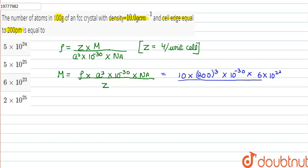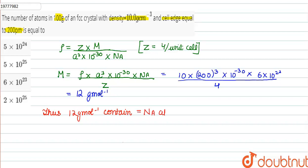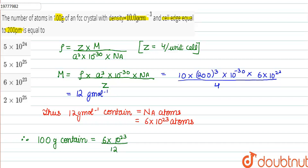Into NA equal to 6 into 10 raised to the power 23, upon z equal to 4. When we solve this, we get the molar mass equal to 12 grams per mole. So, 12 grams per mole contains 6 into 10 raised to the power 23 atoms.